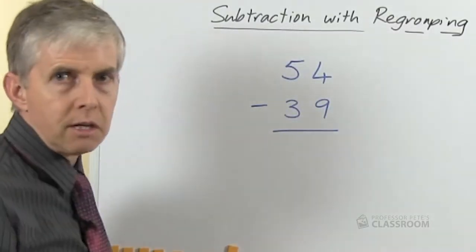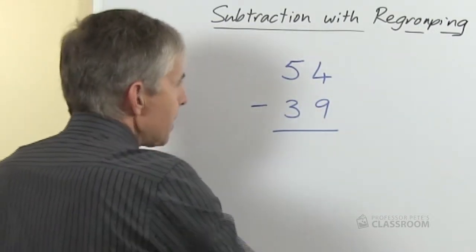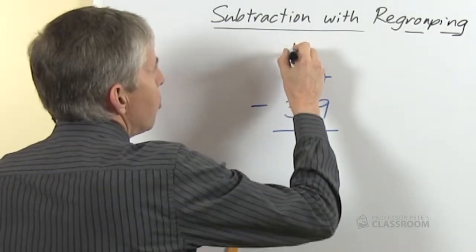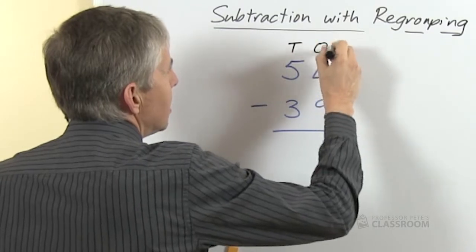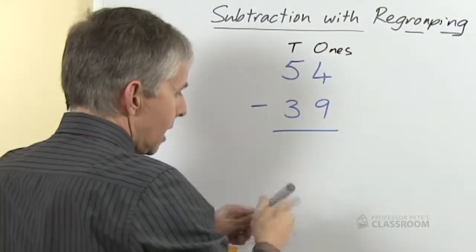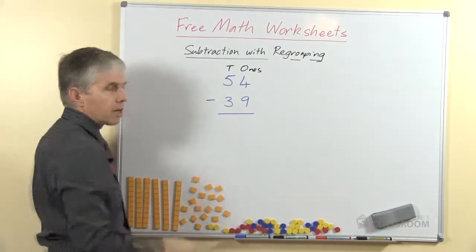We can see that the 54 is made up of 5 tens and 4 ones, and 39 is 3 tens and 9 ones.